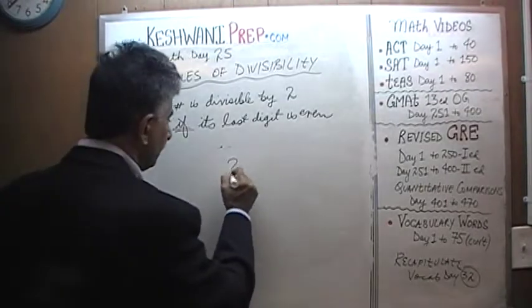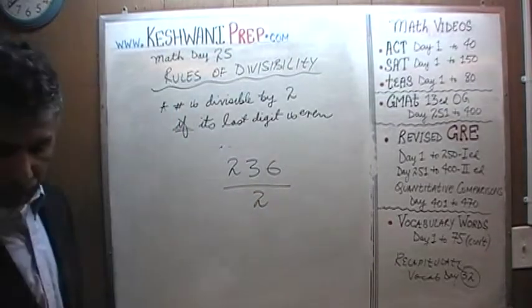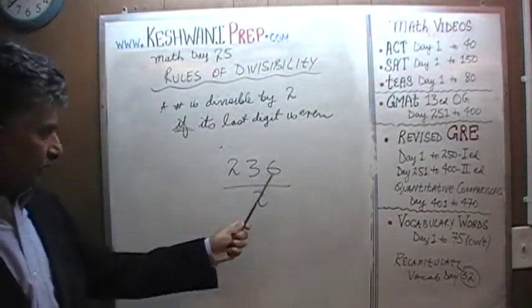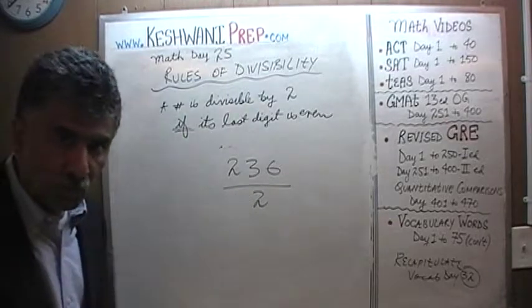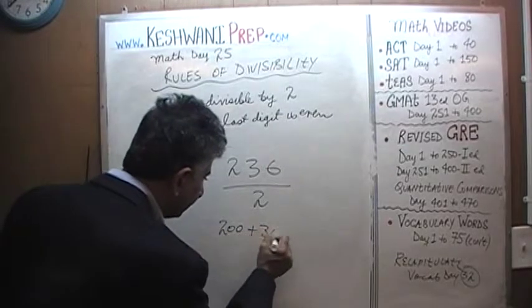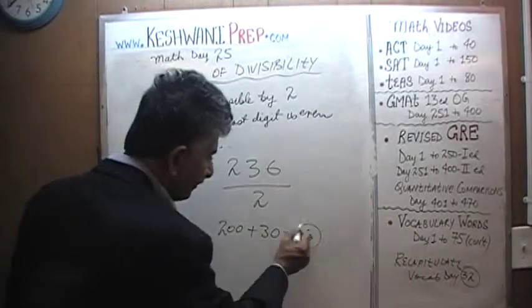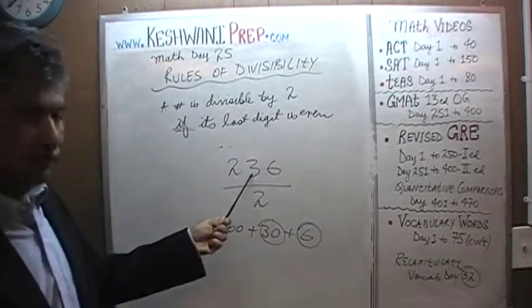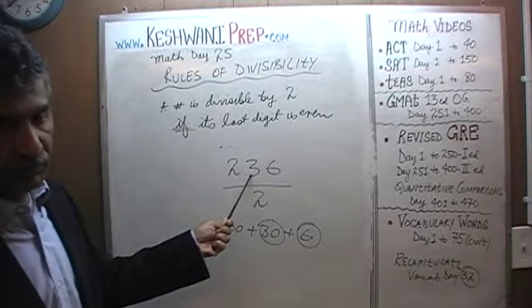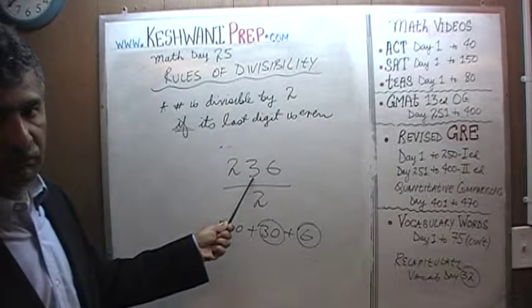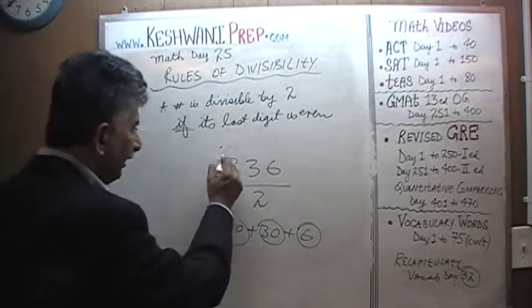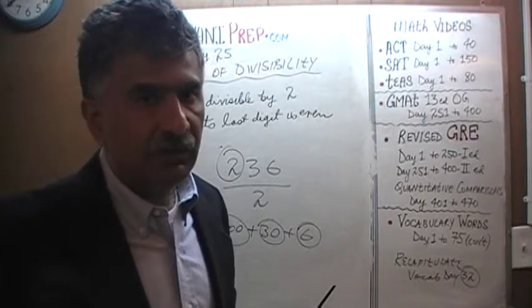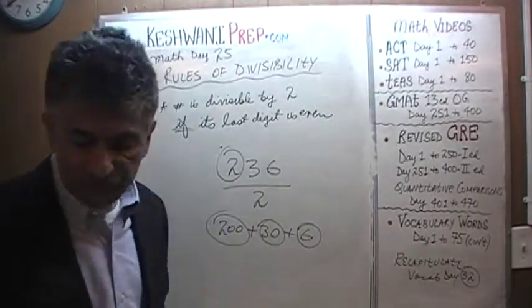For example, 236 is still divisible by 2. Why is it that only the last digit matters? Because 236 is 200 plus 30 plus 6. As long as the last digit is divisible by 2, the rest is going to be divisible by 2, because the tens are multiples of 10, and since 10 is divisible by 2, so is any multiple of 10. Since 100 is divisible by 2, so is 200, 300, 400, or any multiple of 100. The only thing that plays a role is the last digit — the units digit.